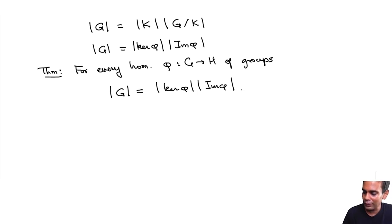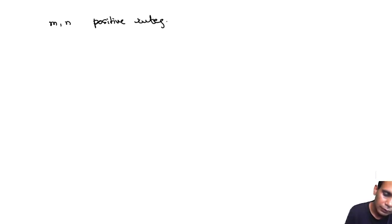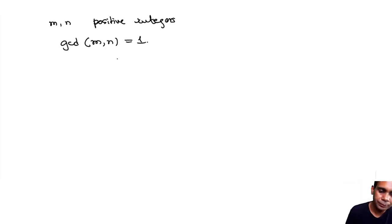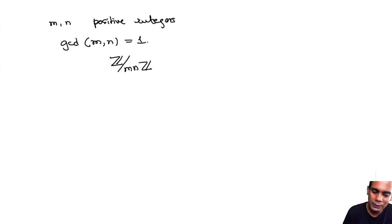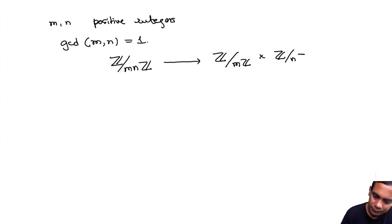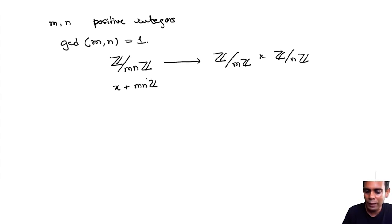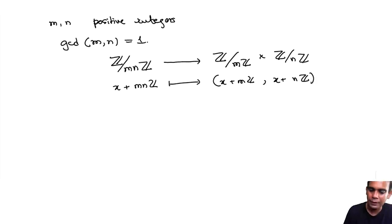What does all this have to do with the Chinese Remainder Theorem? Consider the following homomorphism. Take two positive integers M and N whose GCD is 1. You have the group Z mod MNZ, and a homomorphism φ to Z mod MZ cross Z mod NZ — if M=2 and N=3, this would be Z mod 6Z mapping to Z mod 2Z cross Z mod 3Z. The map sends the residue class of x mod MN to the residue class of x mod M and the residue class of x mod N. This is a group homomorphism.